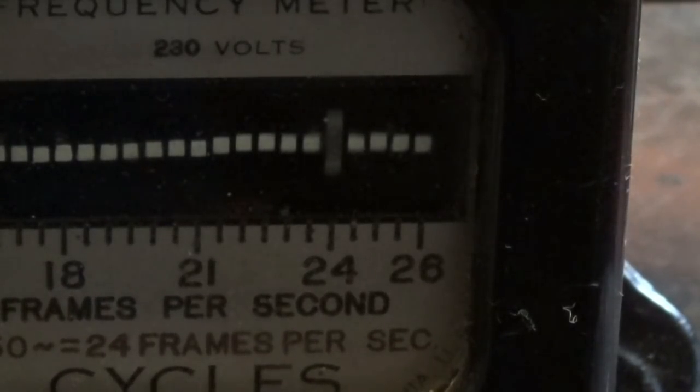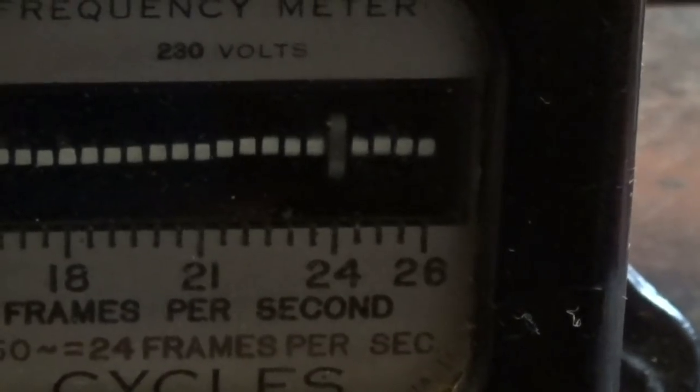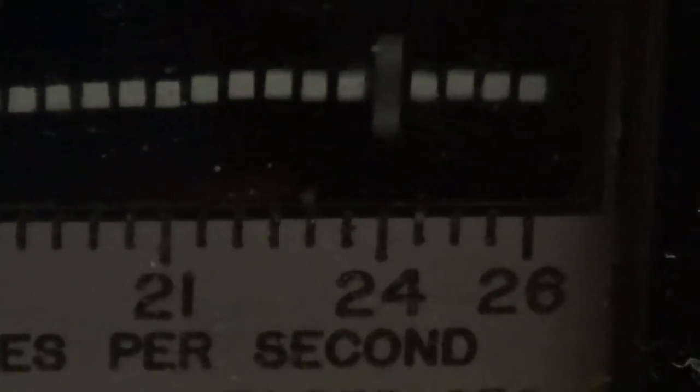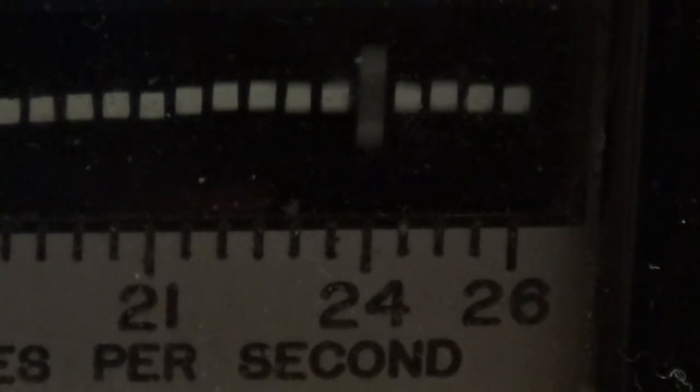24 frames a second is what normal television, it's a lot more nowadays, I know. Even this video you're watching, I think, is at 24 frames a second. Because it was on a standby power supply, you can see that says frames per second and it's at 24, which means it's 50 cycles a second.